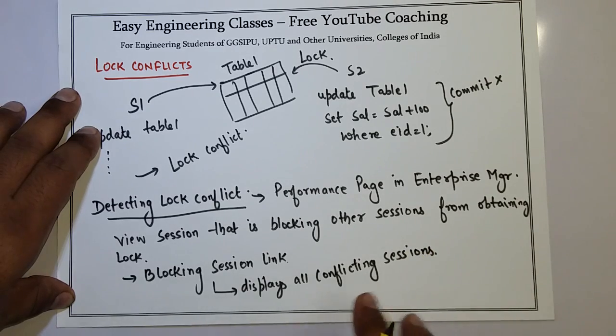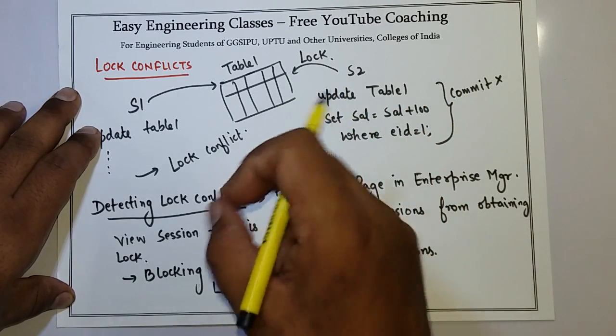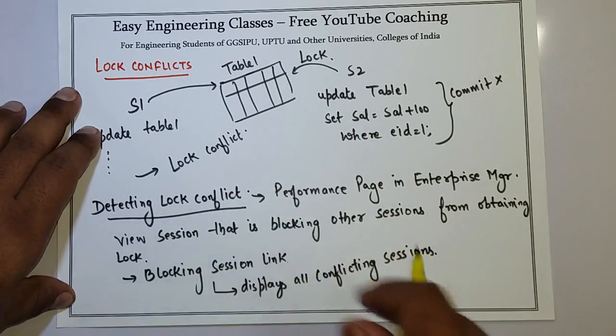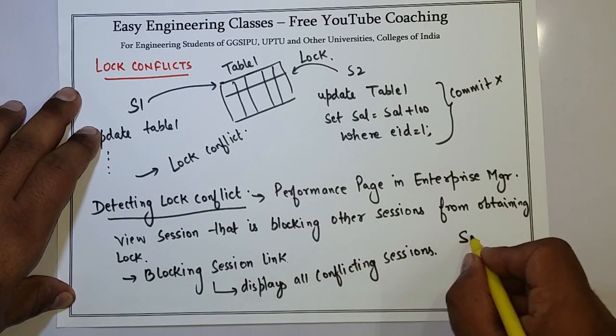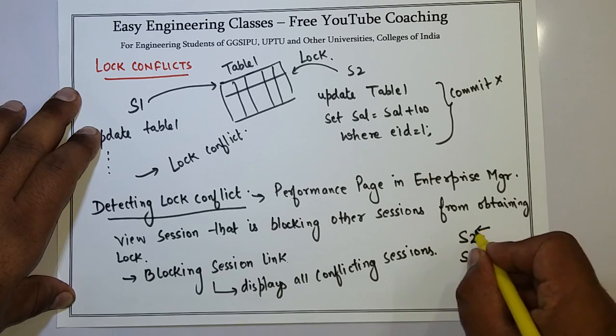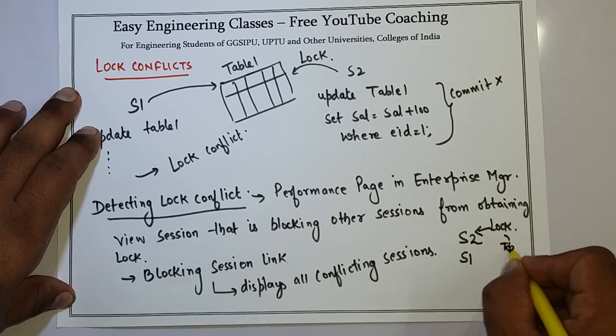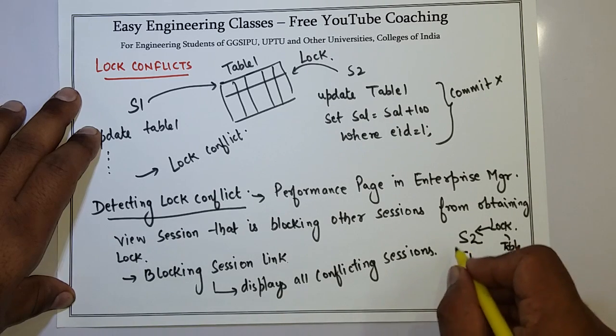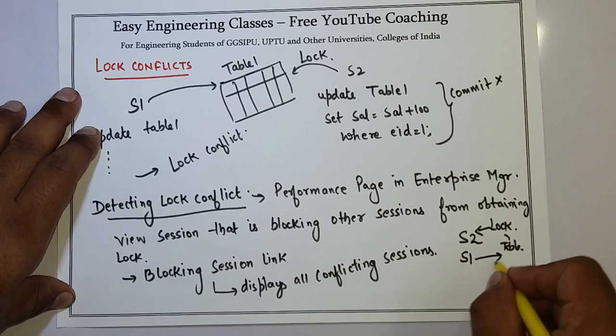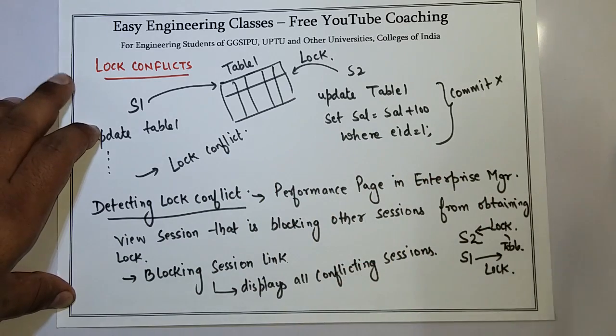And under that particular session, the topmost session is the one which needs to be terminated or needs to be asked to release the lock. So in this case there will be a hierarchy like this: S2 then S1. S2 is the one which has the lock currently on table 1. And S1 is the session which is in the queue and waiting for S2 to release the lock so that it can acquire lock on table 1. So this is how a DBA can detect lock.